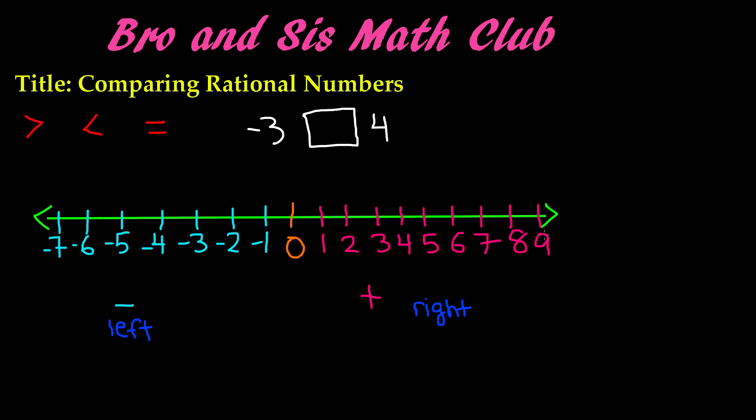In positives, we know that nine would be greater than one because it is farther to the right. However, in negatives, negative one is actually greater than negative seven because negative seven is farther to the left side of the number line, so it is smaller in value. Negative seven is less than negative one.